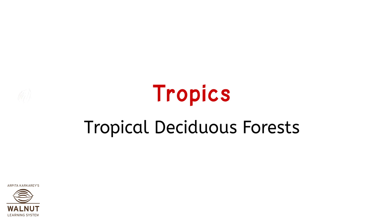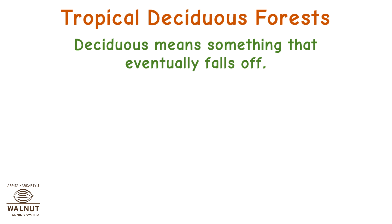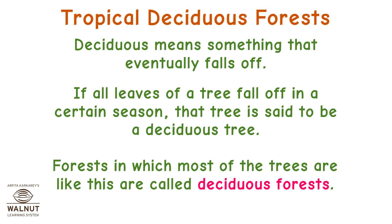Tropics — Tropical Deciduous Forests. Deciduous means something that eventually falls off. If all the leaves of a tree fall off in a certain season, that tree is said to be a deciduous tree. Forests in which most of the trees are like this are called deciduous forests.